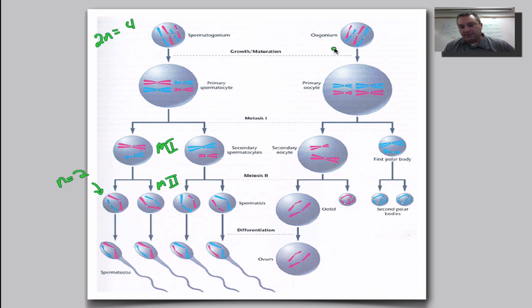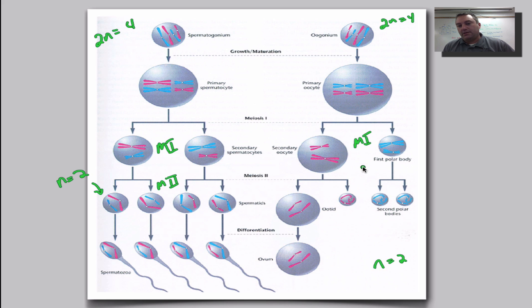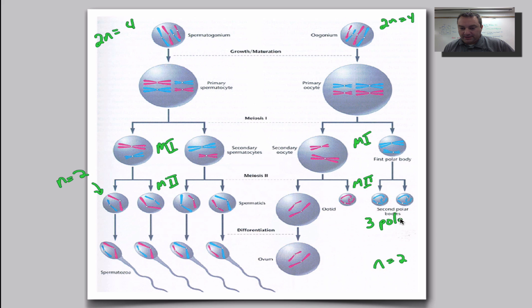In oogenesis, the division is not even. Again starting with 2n equals 4, the final cells have n equals 2. In meiosis one, cytokinesis is uneven — we're putting all our eggs in one basket, so to speak. This produces the first polar body, which is discarded. Then in meiosis two, the division is still uneven, giving us two more polar bodies — three polar bodies total. They're broken down and absorbed by the body. The remaining large cell is your one viable ovum, or egg cell.